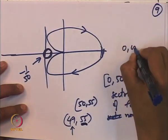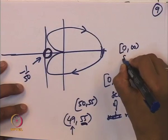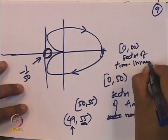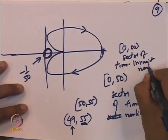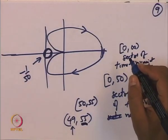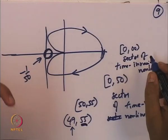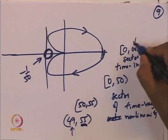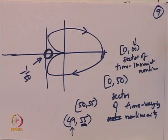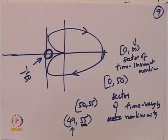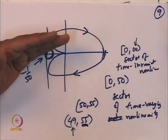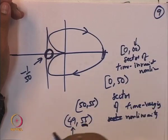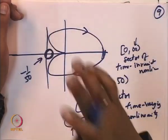For the sector of time-invariant nonlinearities of 0 to infinity for the same example: using the Popov plot, we verified that a line with any positive slope can be drawn to the left of the Popov plot, so the sector can go up to infinity for time-invariant nonlinearities. We will now see an example where the small gain theorem can be used.